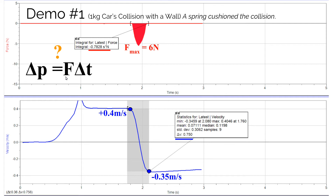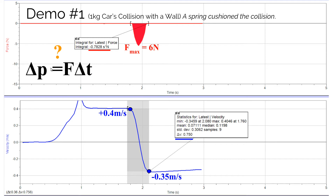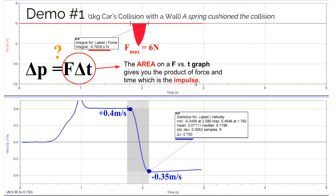To find the product of force times time with a changing force, we use a graphical approach — similar to how we found work as force times distance using a force-versus-position graph, or displacement as velocity times time using a velocity-versus-time graph. For impulse, we need a force-versus-time graph, and the area under that graph gives us the product of force and time, which is the impulse. This is analogous to finding displacement from the area under a velocity-versus-time graph.